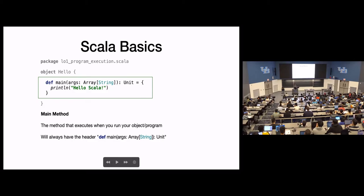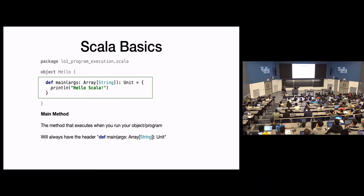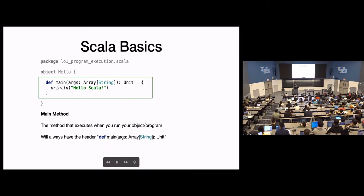If you want to understand the main method header: def says this is going to be a method; main is the name, all lowercase; one parameter which is an array of strings; and return type unit. If you have exactly this — a method named main that takes an array of strings and returns unit, with lowercase m-a-i-n — then Scala recognizes that as the main method where programs start. If anything is different, like it returns an int or takes an array of ints, or it's called main with a capital M, Scala won't know to start your program there.